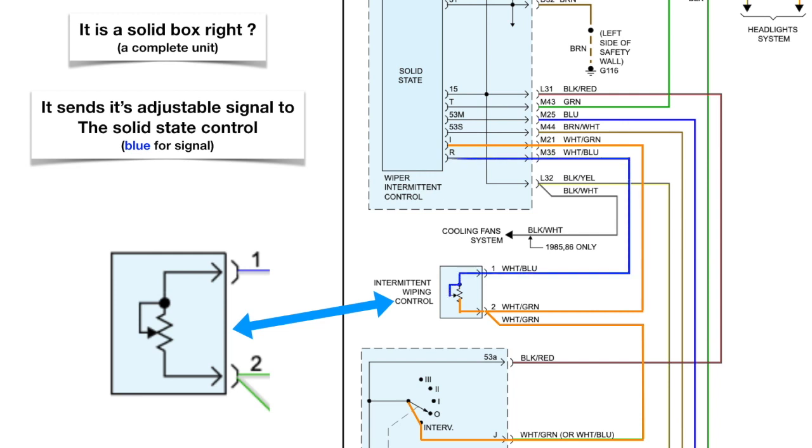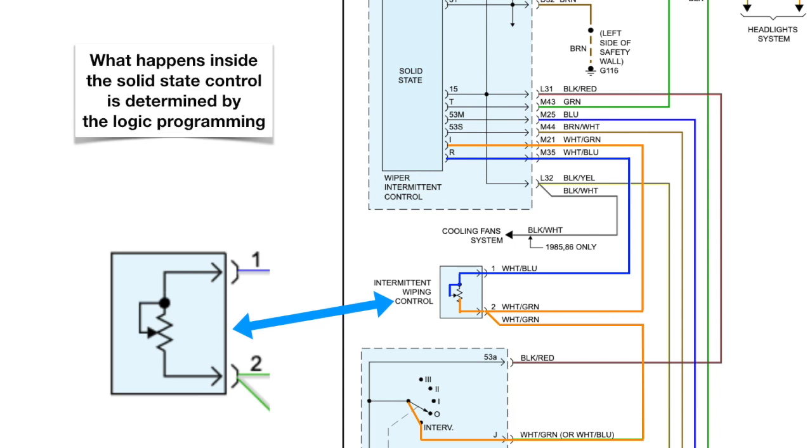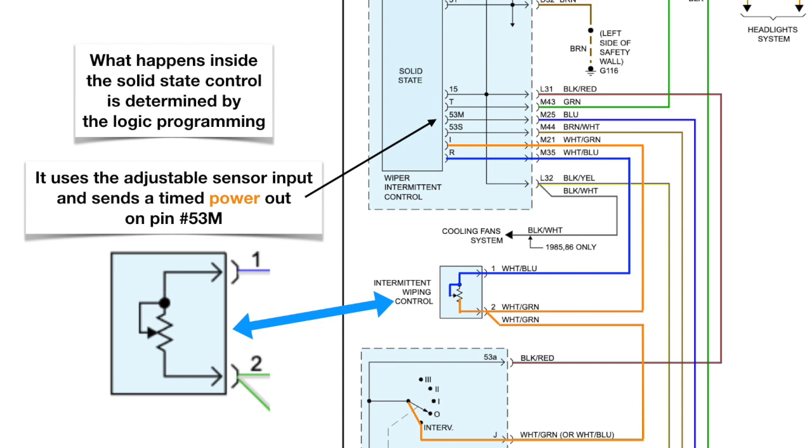It is an adjusted voltage that is going to go up and report to the same intermittent wiper control. What happens inside the solid state control is determined by the logic programming. It uses the adjustable sensor input and sends out a timed output on pin 53M.